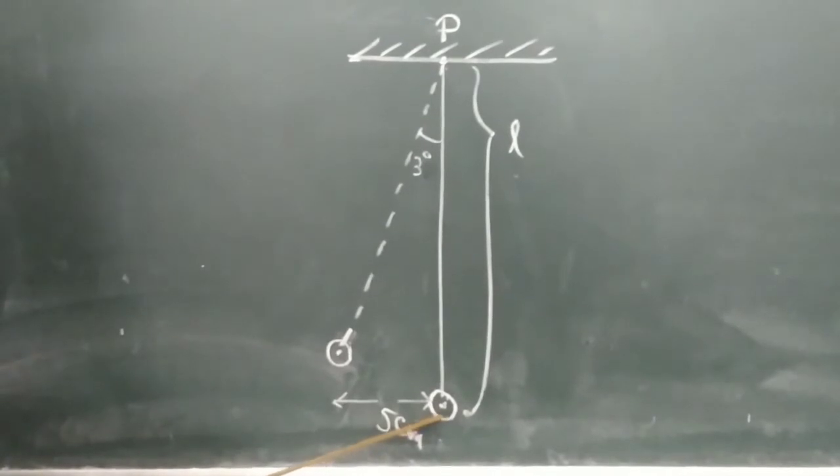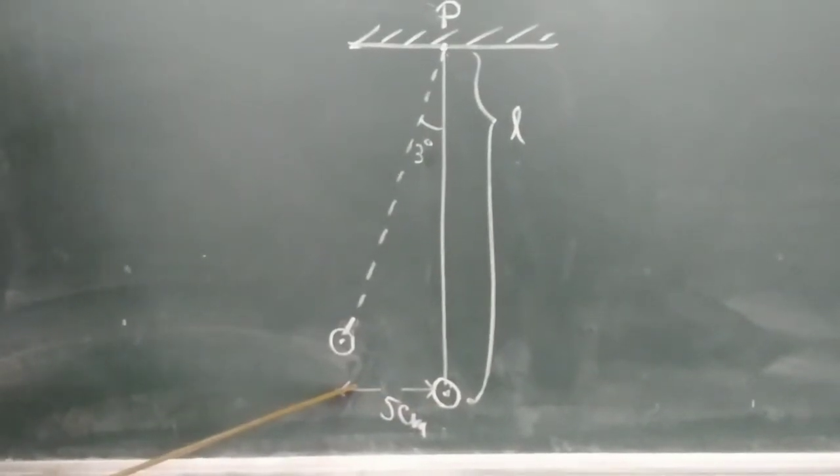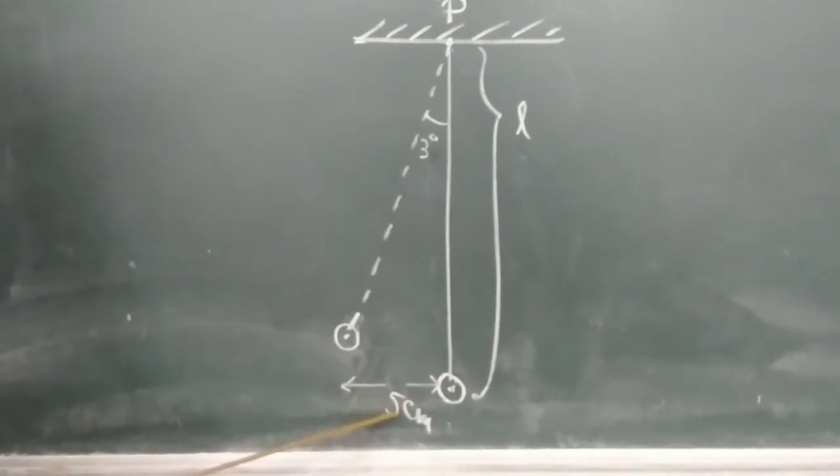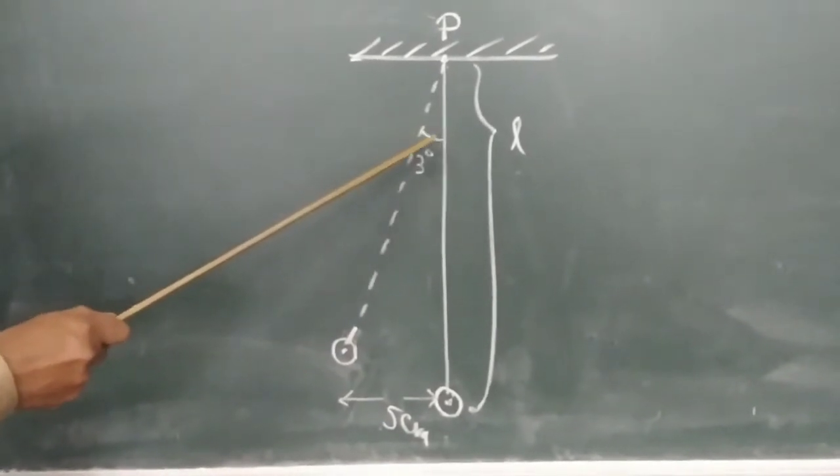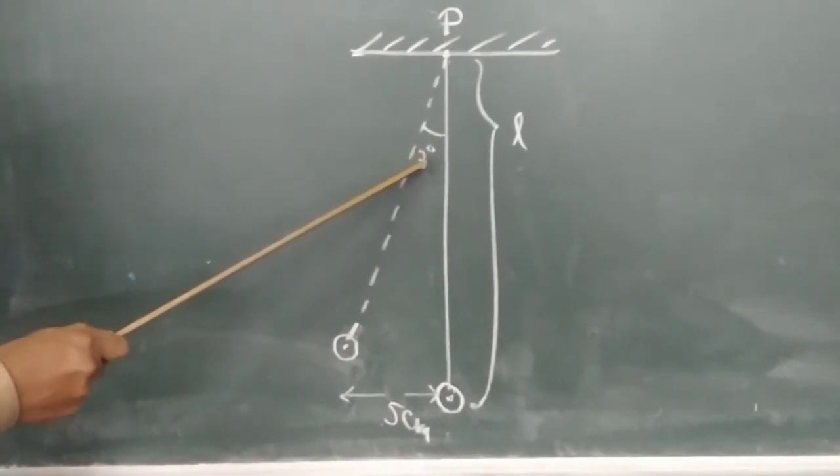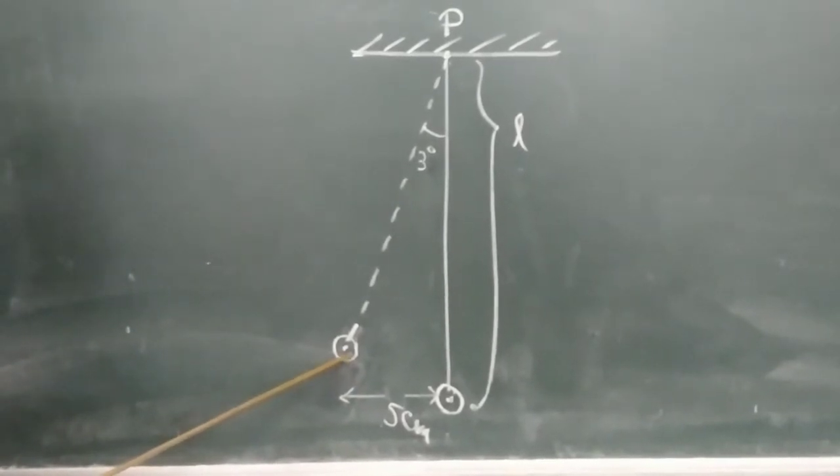when the bob is pushed to one side, say left side, by 5 cm, then an angular difference will create here, 3 to 4 degrees.